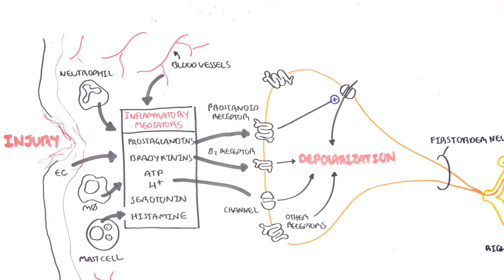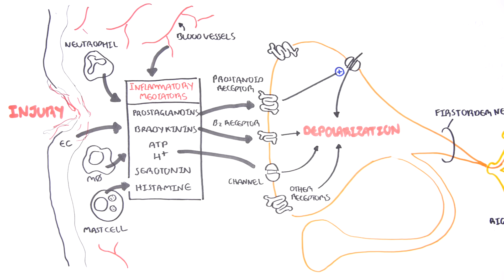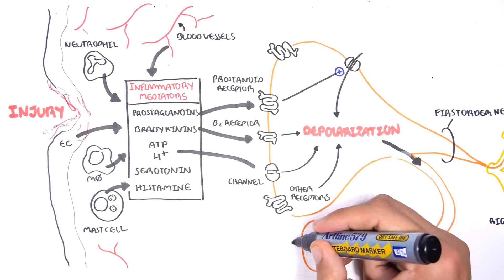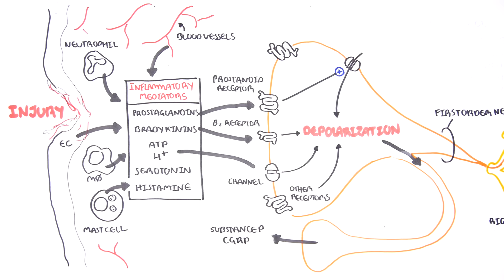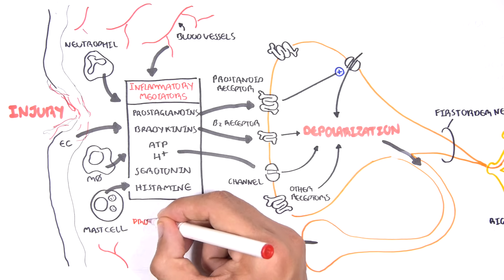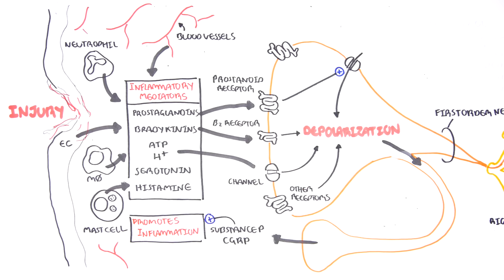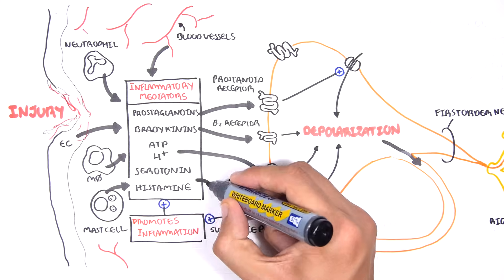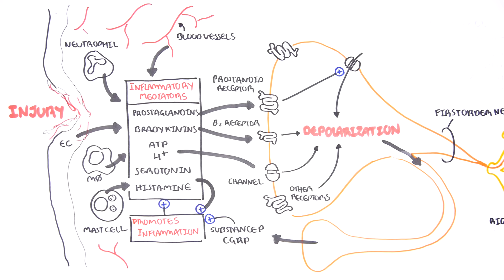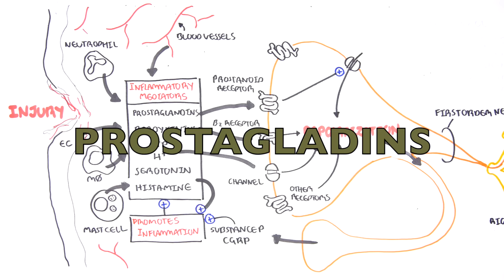What's fascinating is that when this first order neuron is stimulated, it will further promote an inflammatory response by releasing other chemicals such as substance P and CGRP. Thus, this inflammatory process is amplified. Because there are many inflammatory mediators being produced, it's important to remember prostaglandins, specifically prostaglandin E2 and F2, which play one of the main roles in this pain pathway.